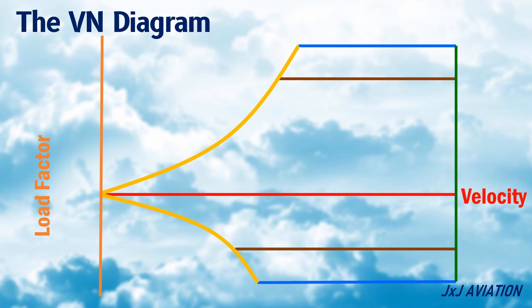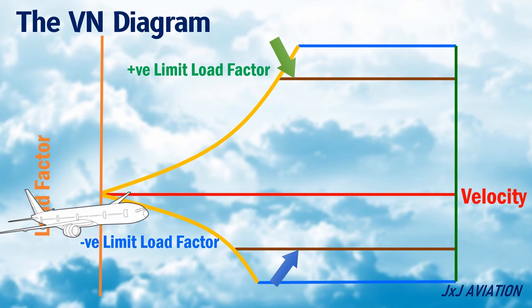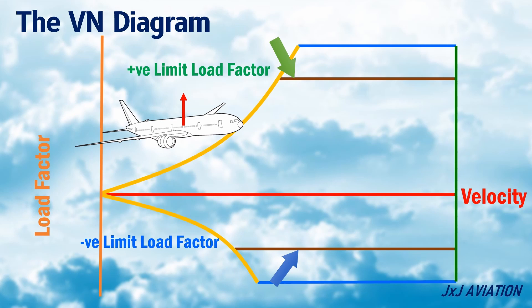These horizontal lines are the positive and negative limit load factors. An aircraft experiences a positive load factor when the lift is acting upward, and the aircraft experiences a negative load factor when the lift is acting downward.